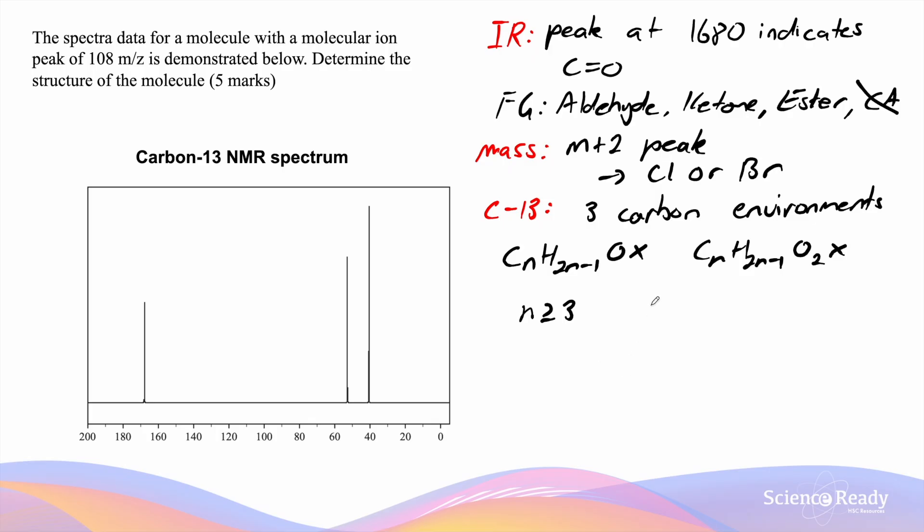So from here we can test if it's either chlorine or bromine by substituting them into the equation. Let's try for chlorine first. If the aldehyde or ketone contains chlorine, then the compound formula would be CnH2n-1OCl. This means that 12n plus 2n-1 plus 16 plus 35 would equal to 108.